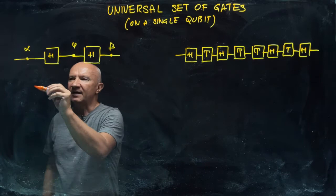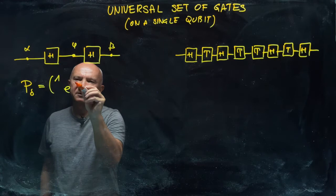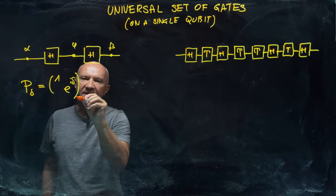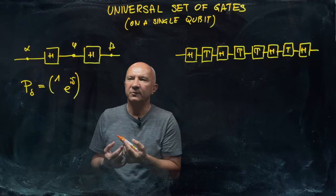So for example, if I choose P_δ, so that is a phase gate that implements phase shift by delta. And if this delta is a rational multiple of pi, so by which I mean that if you take delta divided by pi...